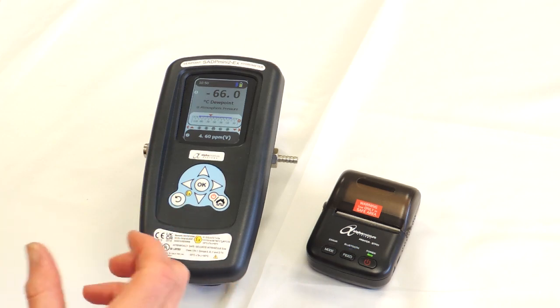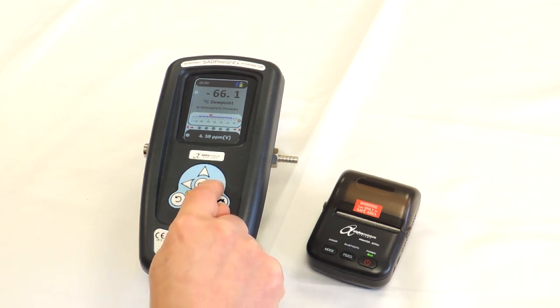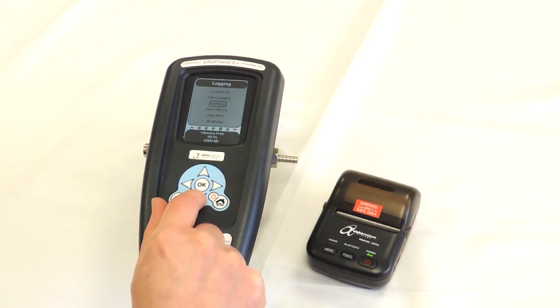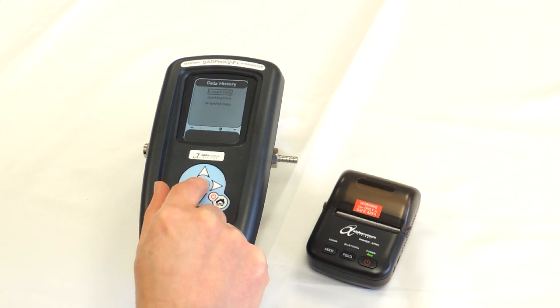We're now going to show you how to print some data from the SADP Mini 2 EX to the Bluetooth printer. Let's go to a logging screen that we've got some data previously logged on. So we go to logging first then we go down to quick log data history. We're going to go into data history and then we've got three options log data, quick log and snapshot data. We're going to go to snapshot data.